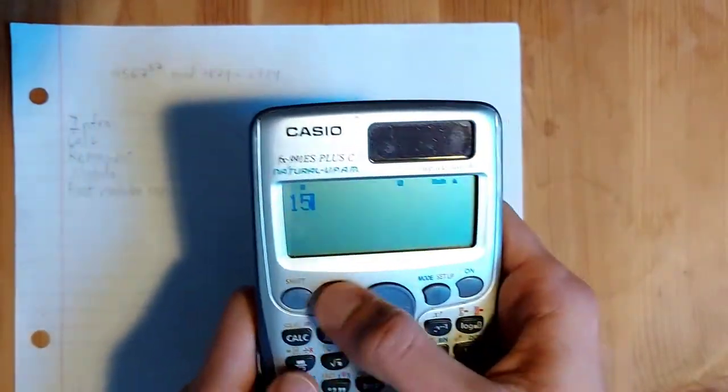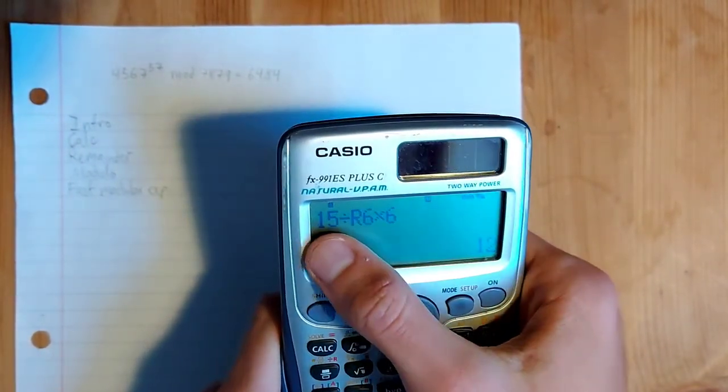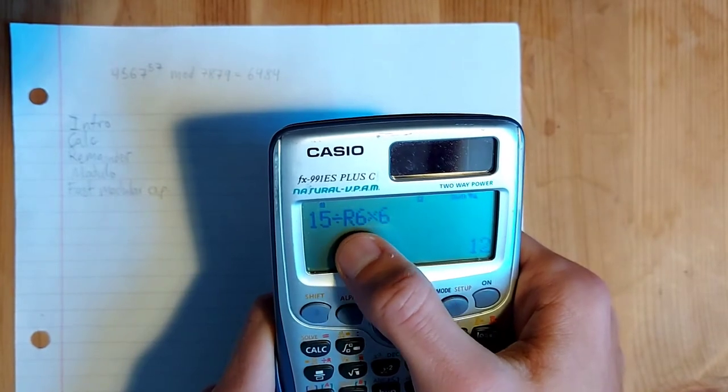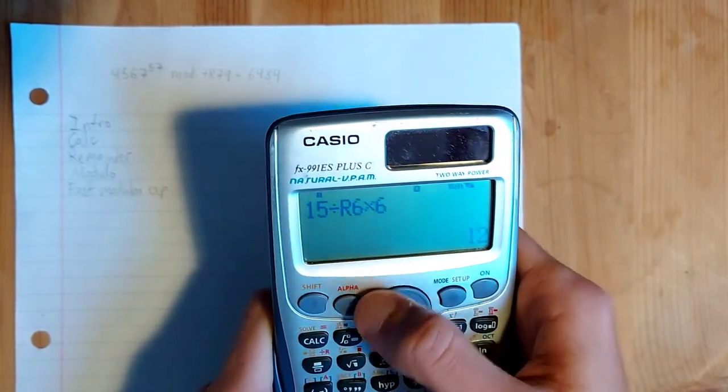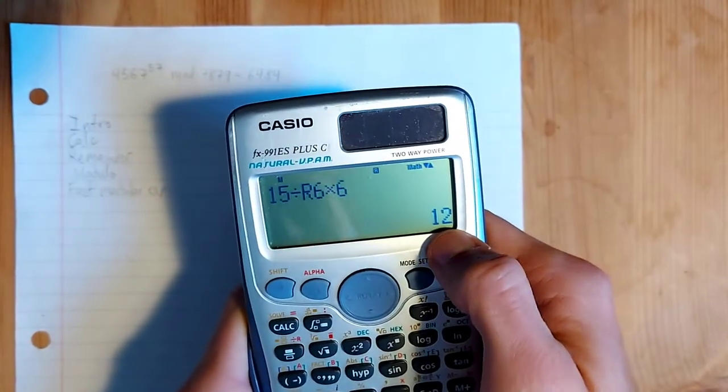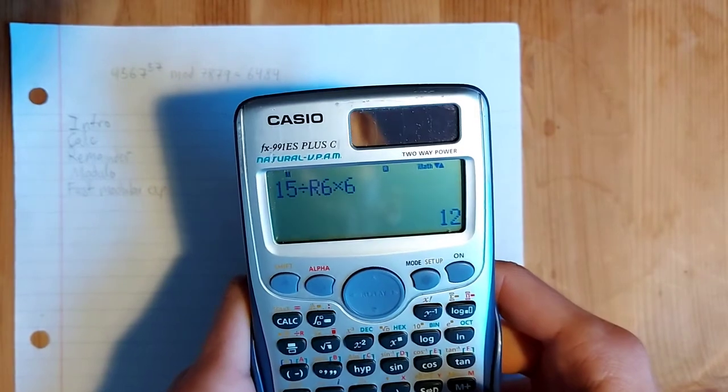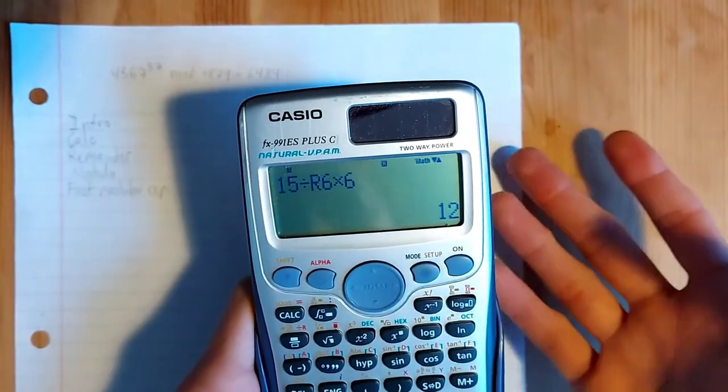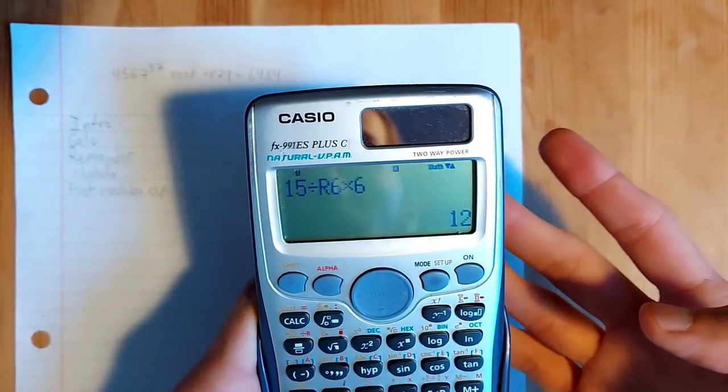And if we test something else, we can see that that's true. So 15 integer division six times six gives us two times six, which is 12. So that's how the remainder operation works on the Casio FX 991.